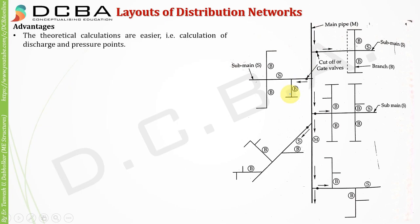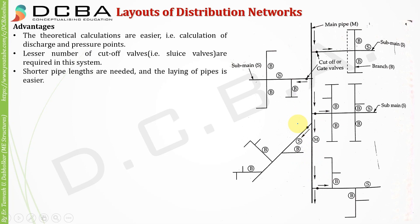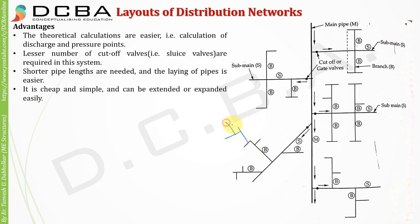Advantages of the dead end system: theoretical calculations are easier — calculating discharge and pressure at various locations is simpler. Fewer cutoff valves are needed; in an entire system with many sub mains and branches, only about five to six cutoff valves are required. Shorter pipelines are needed, laying pipes is easier, it is cheap and simple, and can be extended or expanded easily.